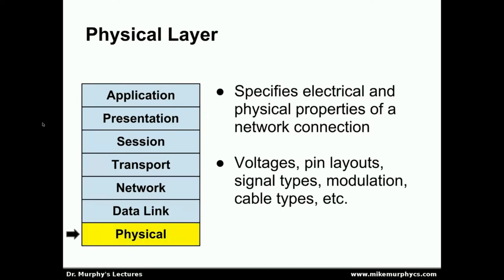At the lowermost layer, we have the physical layer, at the bottom of the OSI model. This layer specifies the electrical and physical properties of a network connection, including the voltages used by the connection, the pin layouts for how different voltages are connected to circuits, the types of signals and modulation used, and the types of cable used. Not all physical layer connections are necessarily electrical — for example, we have radio wave connections with wireless networking, and optical physical layers for fiber optic connections.